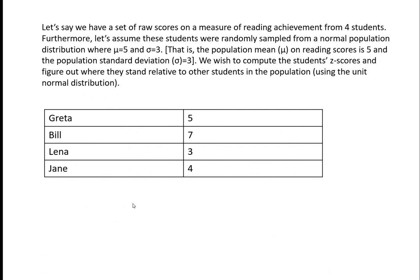Let's begin with an example. We have a set of raw scores on a measure of reading achievement from four students. Assume these students were randomly sampled from a normal population distribution with a mean of five and a standard deviation equal to three. We wish to compute their z-scores and figure out where they stand relative to other students in the population using the unit normal distribution. The students are Greta, Bill, Lane, Lena, and Jane, with scores of five, seven, three, and four.